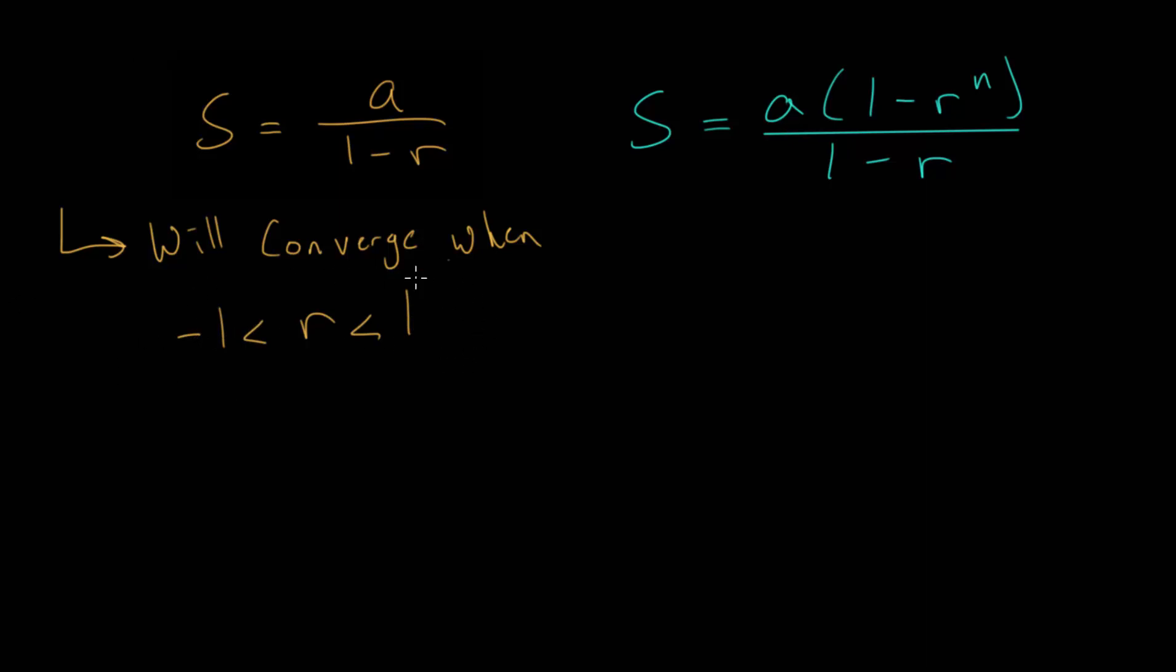If it's some value greater than one or less than negative one, so more negative, then in those cases it will diverge. The sum will just get bigger and bigger, and it will approach infinity as the term value approaches infinity.